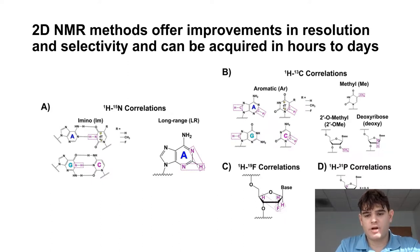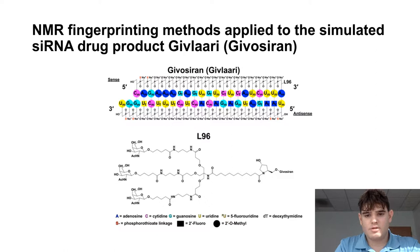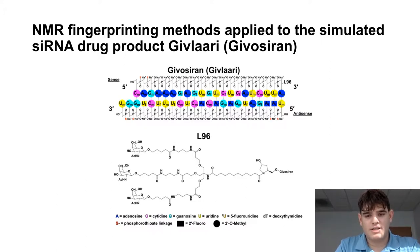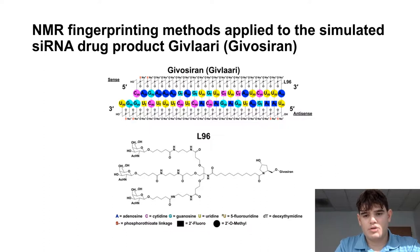All the data shown so far has been on our model siRNA. What do these data look like on an FDA-approved drug? To answer that, we have a simulated siRNA drug product, Givosiran, shown here. Givosiran contains many of the same chemical modifications represented in the model siRNA, including 2'-O-methyls, 2'-fluoros, and phosphorothioate linkages. An additional feature of Givosiran is that it contains an L96 GalNAc ligand conjugated at the 3' end of the sense strand to aid in drug delivery — this ligand is unique to Givosiran in comparison to the model siRNA.